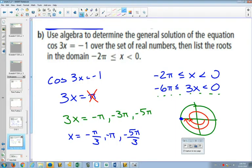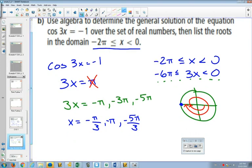Then, if we divide by 3 on each of these, we'll get x is equal to negative pi over 3. Negative 3 pi over 3 divided by 3 will just be negative pi. And negative 5 pi over 3. And those will be all the answers from 0 to negative 2 pi.